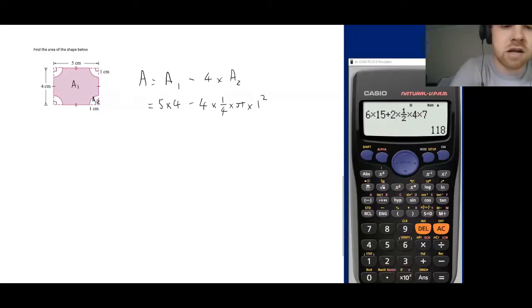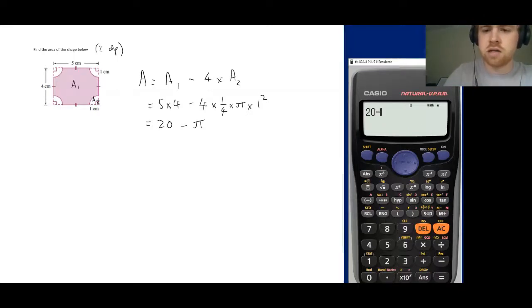Now we don't even need a calculator for this one. It's going to be 20 minus, and four times a quarter is just going to be one, so it's just going to be 20 minus pi. If we wanted to simplify to two decimal places, we'd go 20 minus pi equals 16.858 and then we can round that to 16.86 centimeters squared.